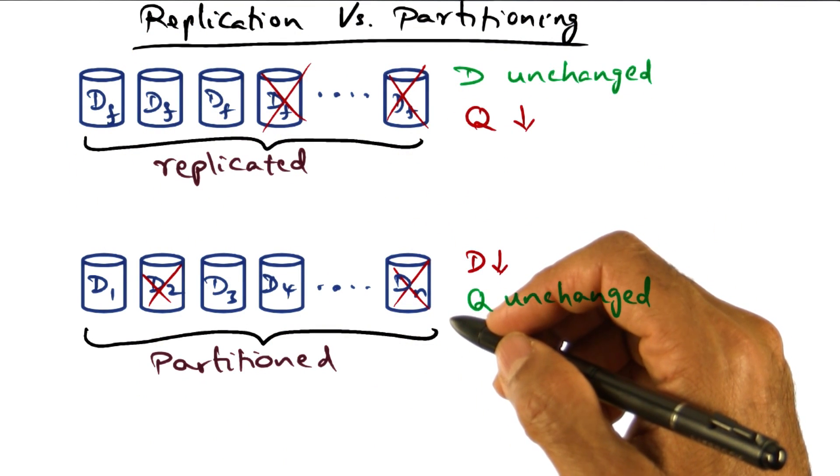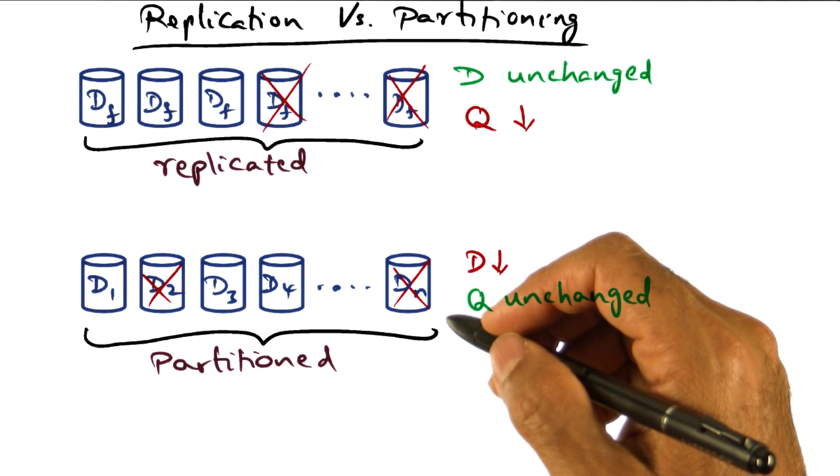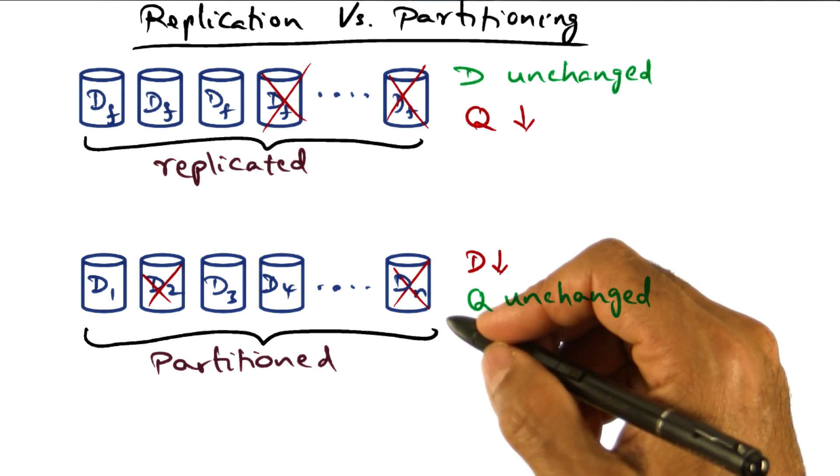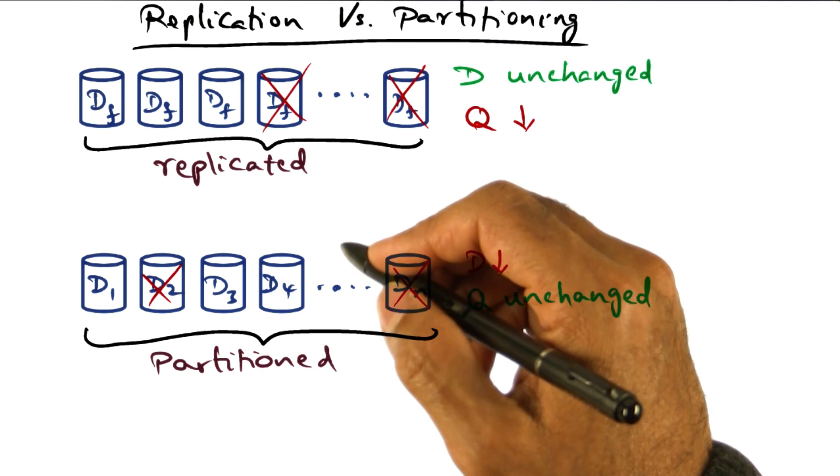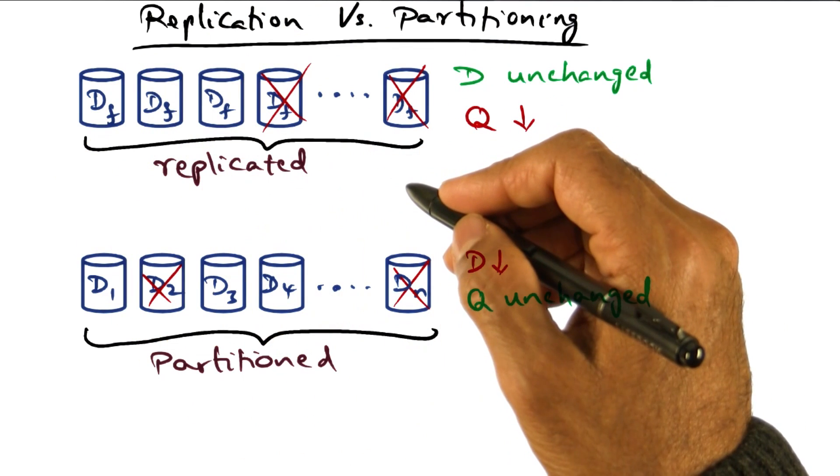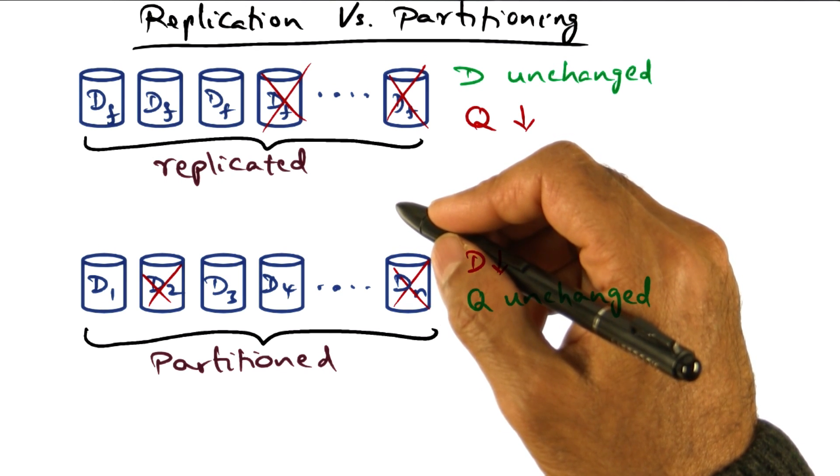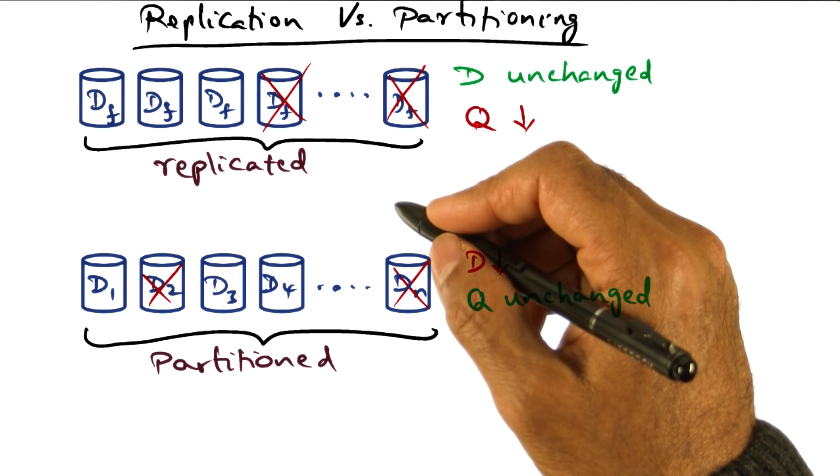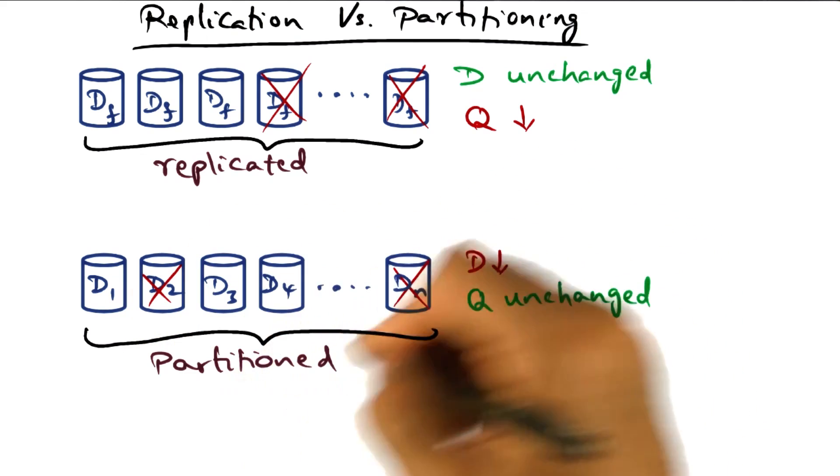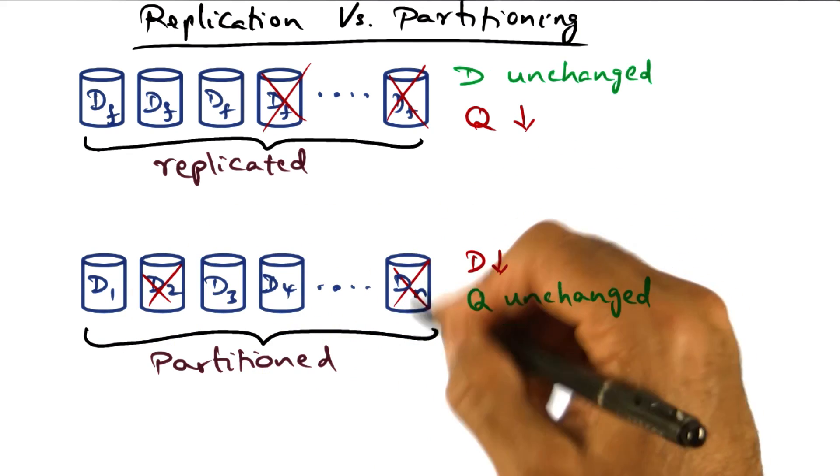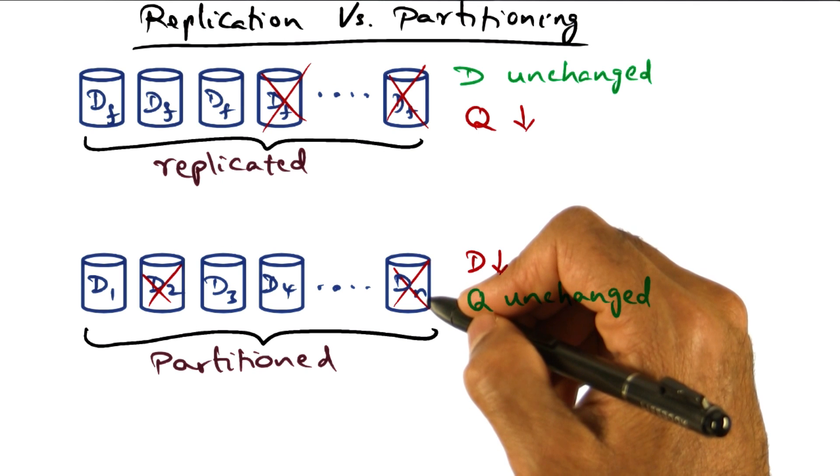This gives an object lesson to the system administrator in saying that beyond a certain point, you probably want to replicate and partition. Why? Because failures are bound to happen. And if failures are bound to happen, if you partition the data, then a portion of the data corpus becomes unavailable.